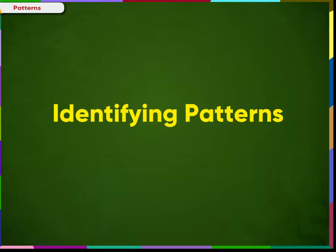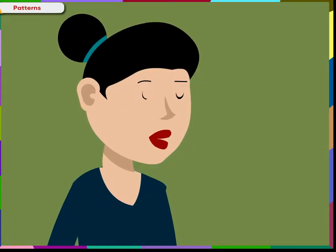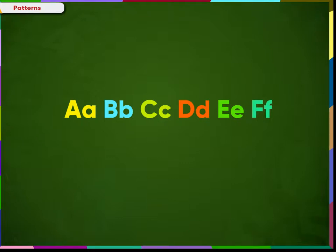Identifying patterns. What is the pattern shown here? Capital letter and small letter of every alphabet is shown here. Can you continue the same pattern till O? Yes, I can.